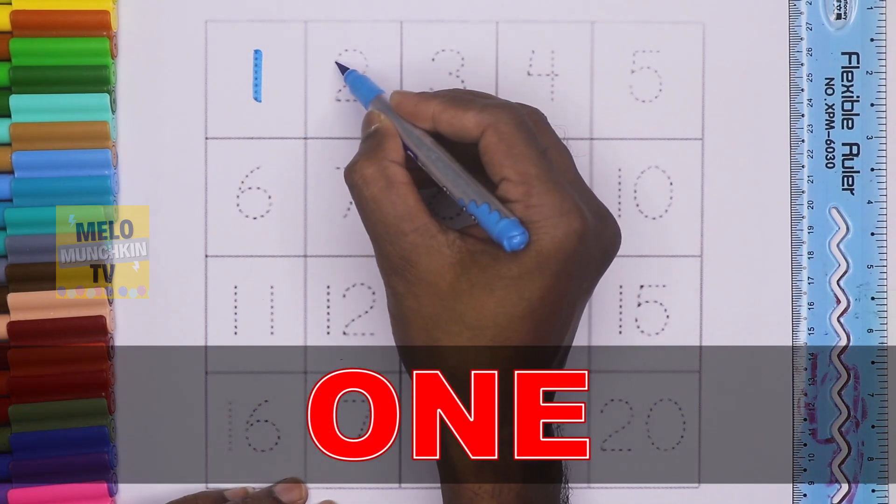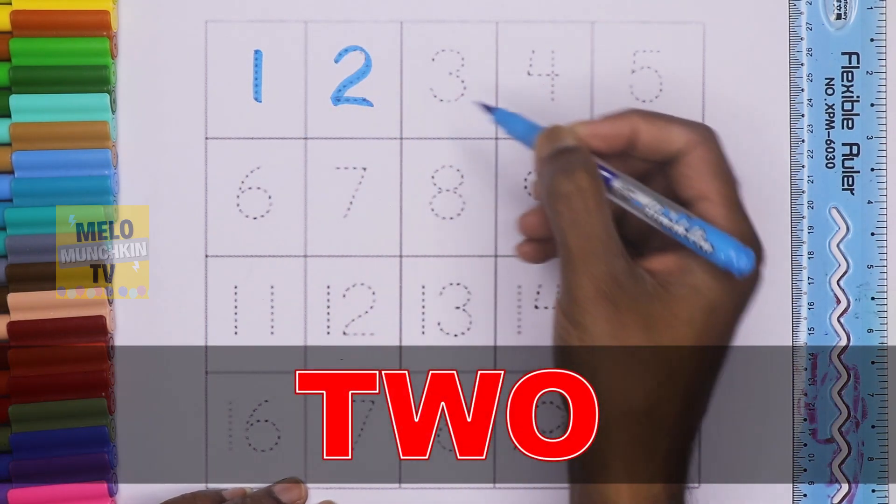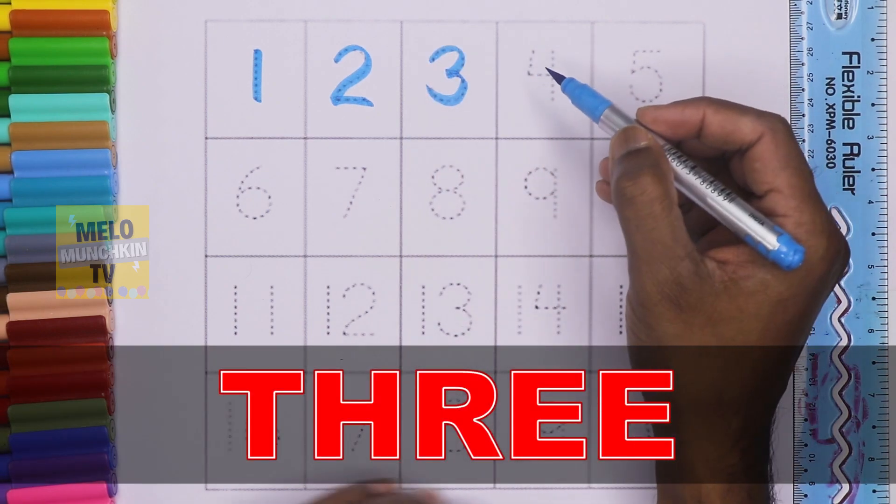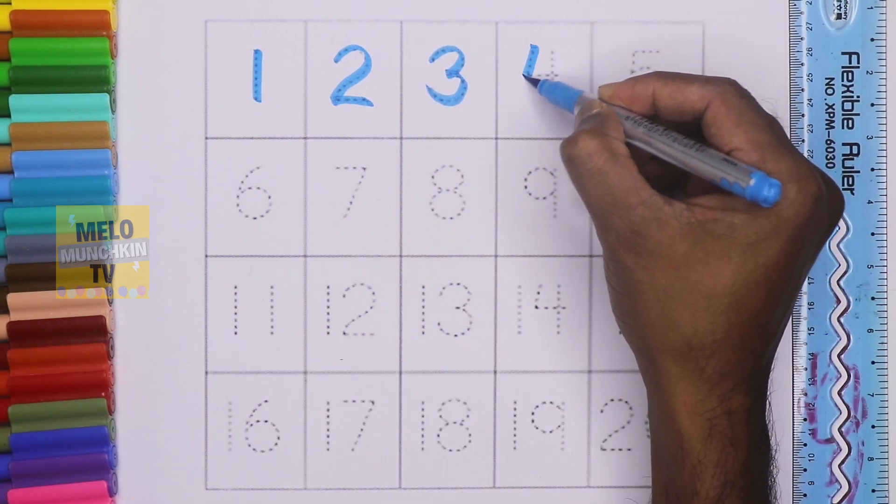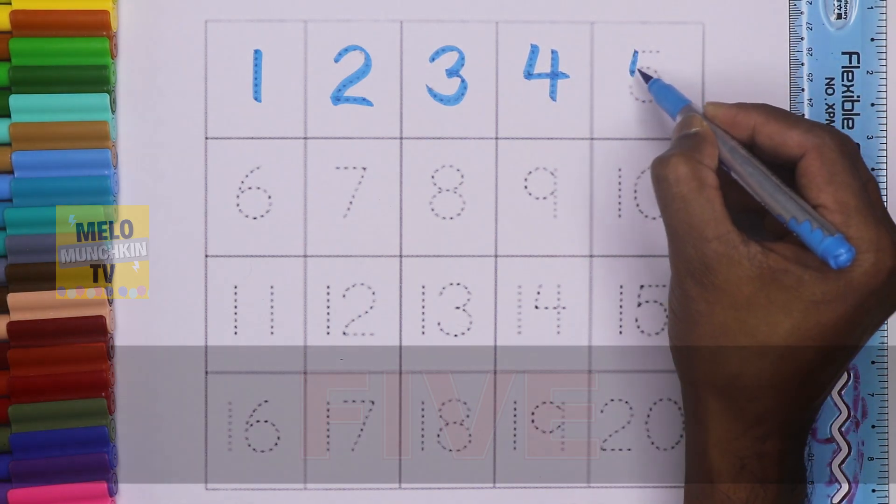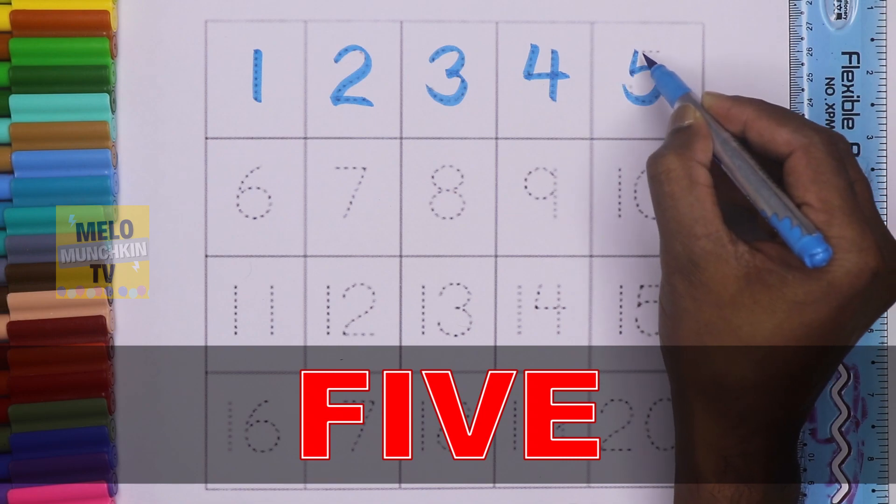This is number 2, T-W-O, 2. This is number 3, T-H-R-E-E, 3. This is number 4, F-O-U-R, 4. This is number 5, F-I-V-E, 5.